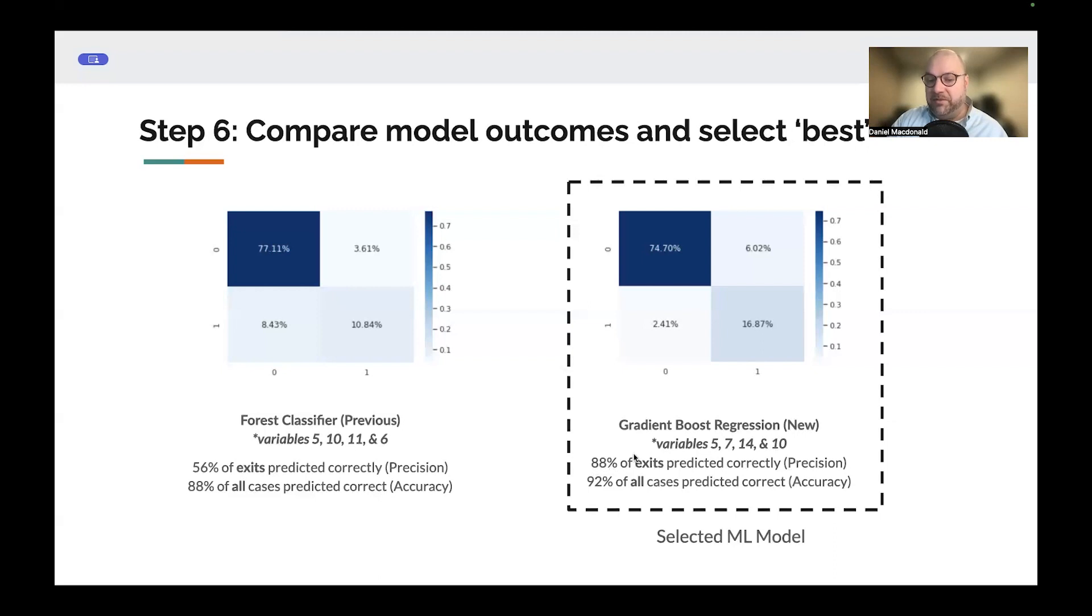And we use those for the model. In that case, we got 88% precision. So the majority of the cases that we had observed exiting actually were predicted as exiting. A very small percentage of people got missed. And then also again, the 74%. So we actually lost a little bit of prediction accuracy here where people who didn't leave, we ended up predicting a few more of those as leavers than in the classification case. But the overall accuracy and precision as a balance ended up being much better. So we selected that model.